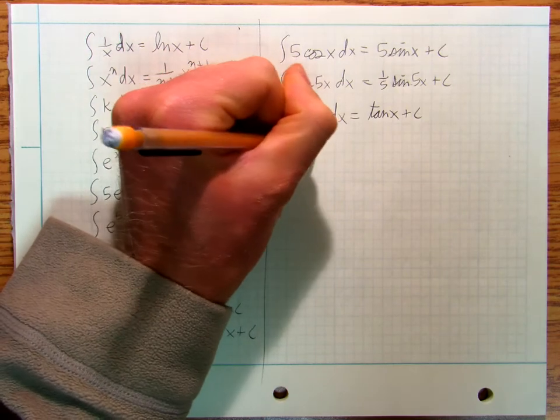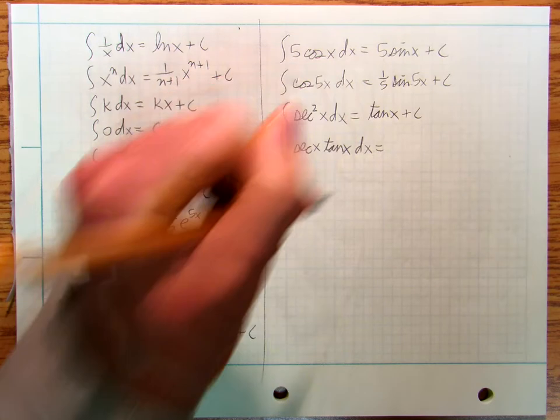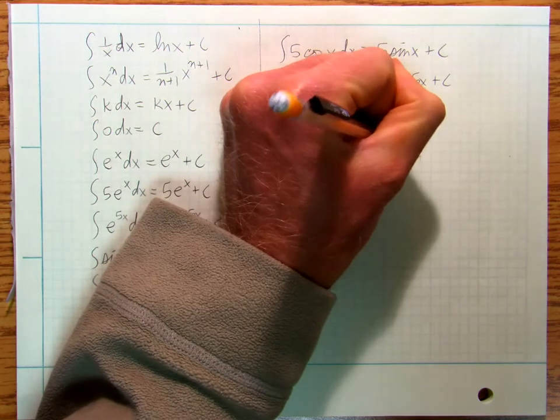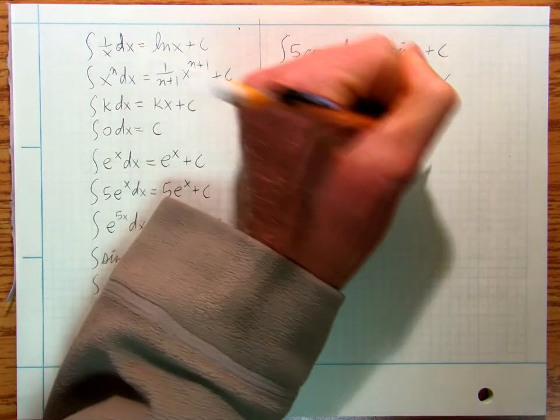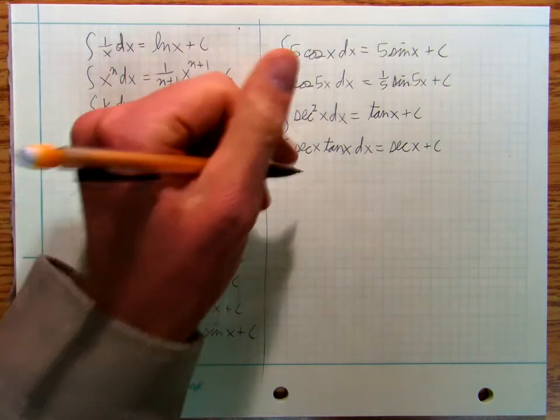And I got that plus c. And then you've got... And if you really do a function... You need a derivative of secant x tangent x. That was secant x plus c.